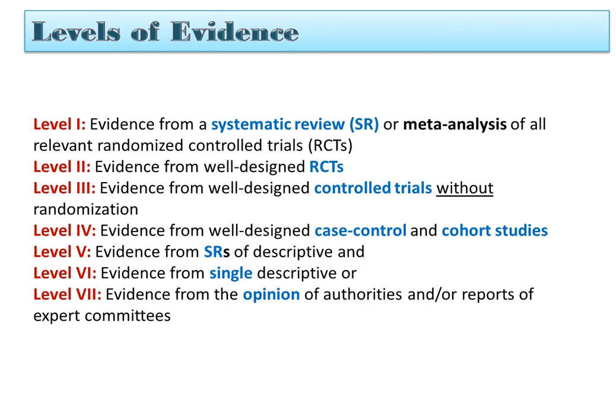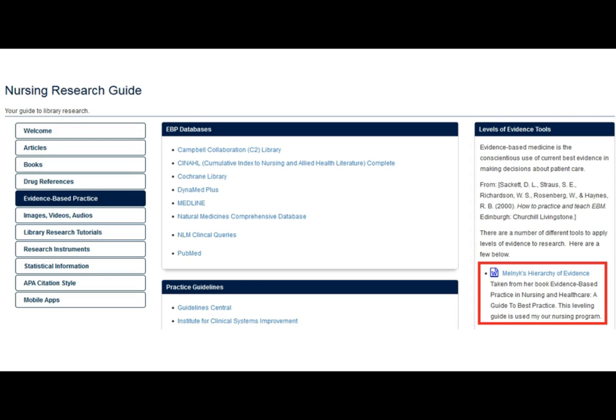On this next slide, I'm giving you a representation of Dr. Melnick's level of evidence tool, where she grades systematic reviews and meta-analyses as level one evidence, level two evidence is from well-designed randomized controlled trials, and then so on down the list. You can find that leveling tool on the library's nursing research guide by clicking the evidence-based practice tab and then looking for the highlighted area on the right.